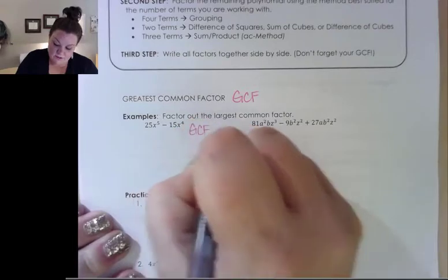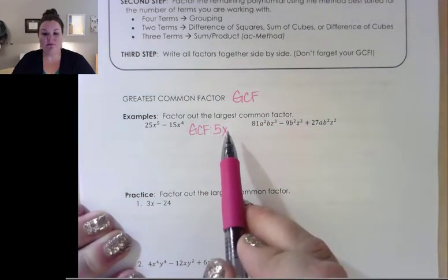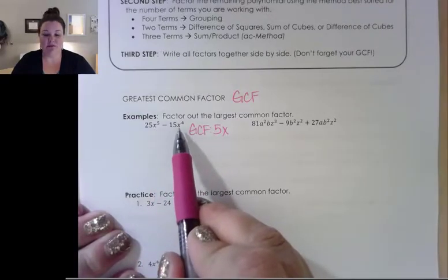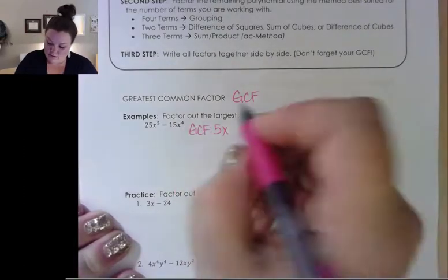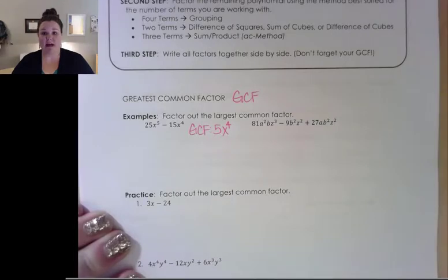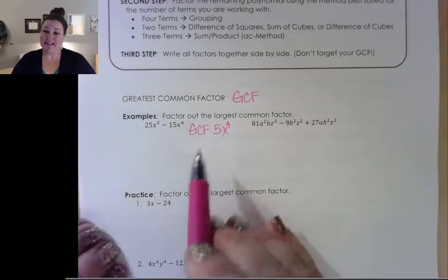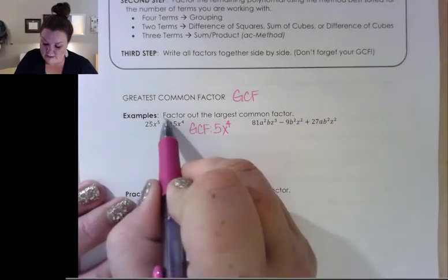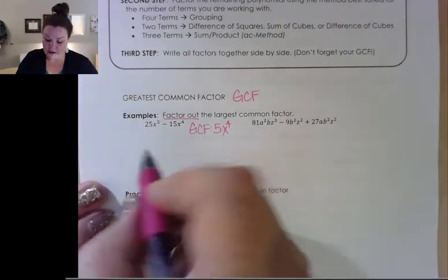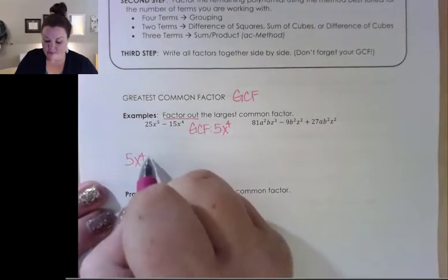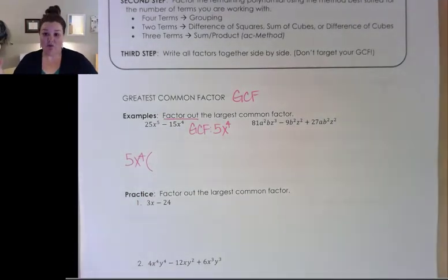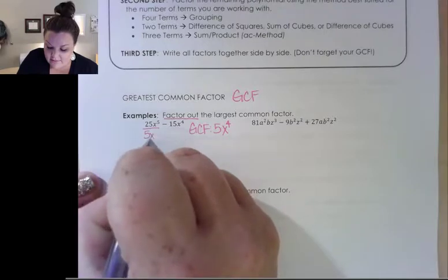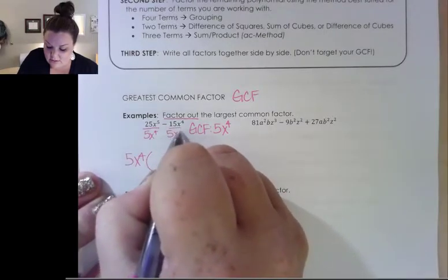Both of these numbers are divisible by five, and they both have x's. So our greatest common factor here would be five, and the maximum number of x's I can take out before one of the terms runs out of x's is x to the fourth. Because once I've taken out four x's, this one has no more to give. So I can take 5x to the fourth out. It didn't just say what is the greatest common factor — it said factor it out. So any time you see factor out, that means they want you to write what you're taking out, which is our 5x to the fourth. And then in parentheses, we write what's left over once that is divided out of every single term.